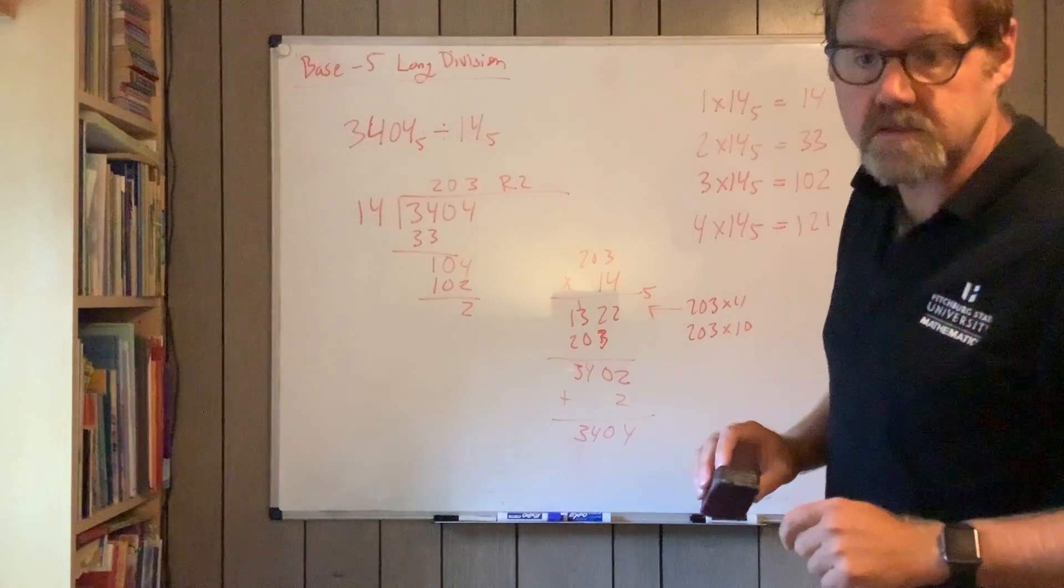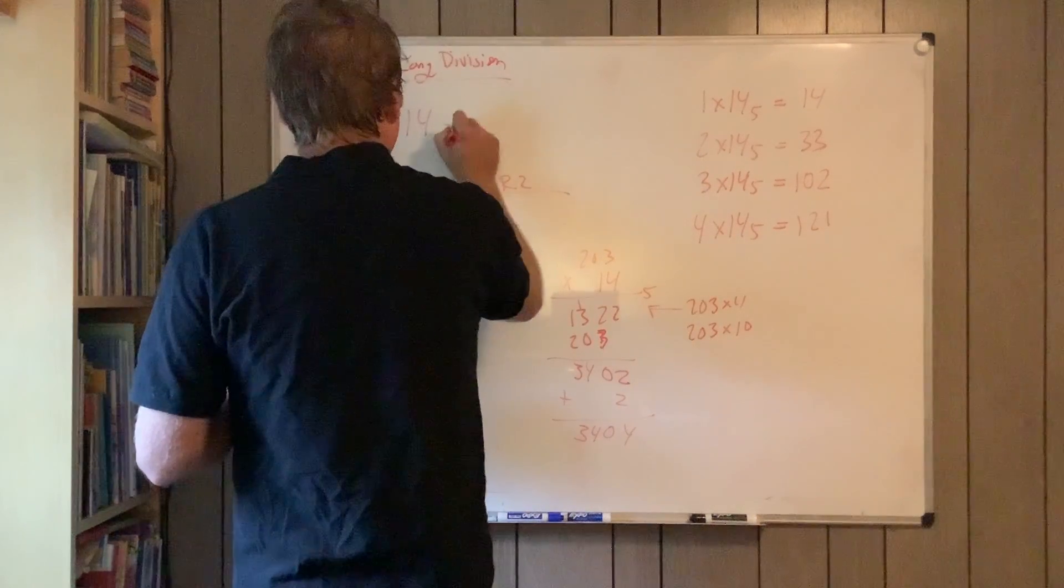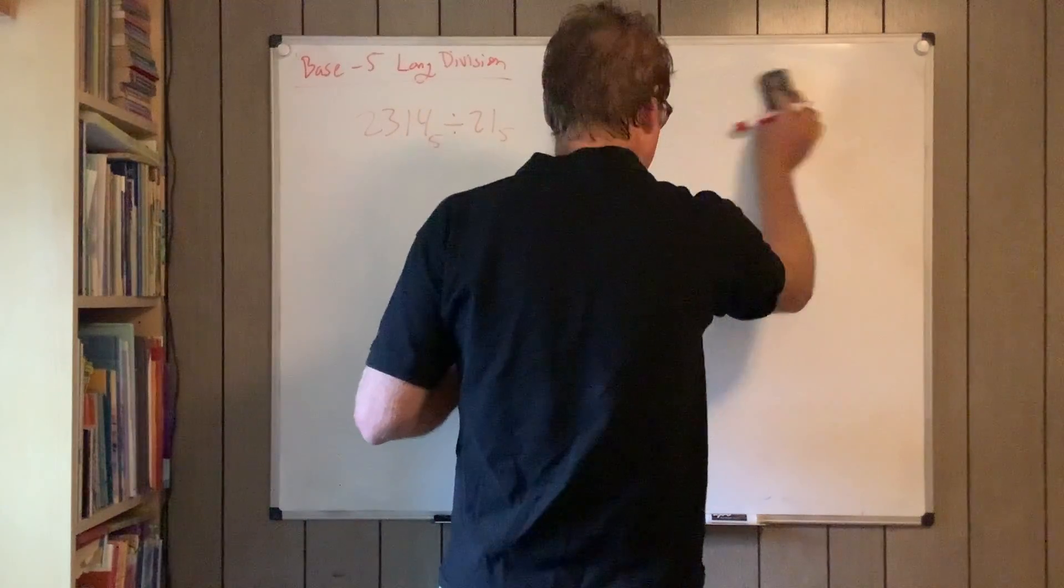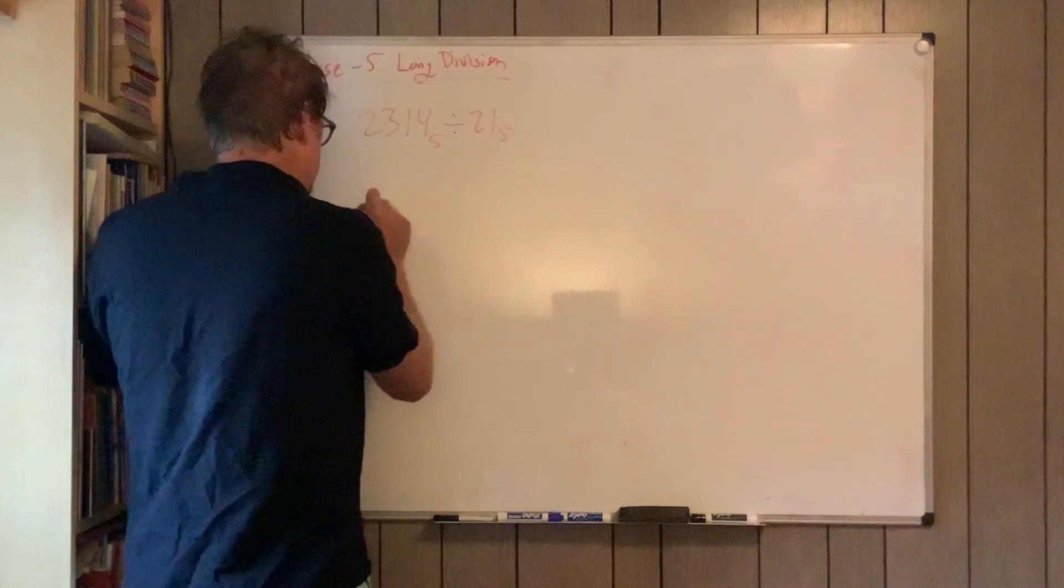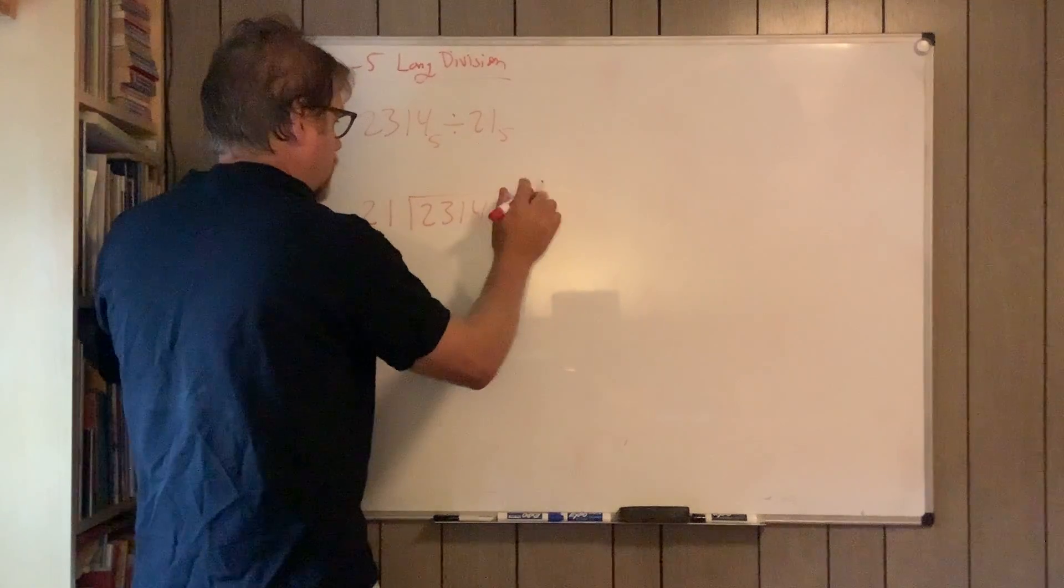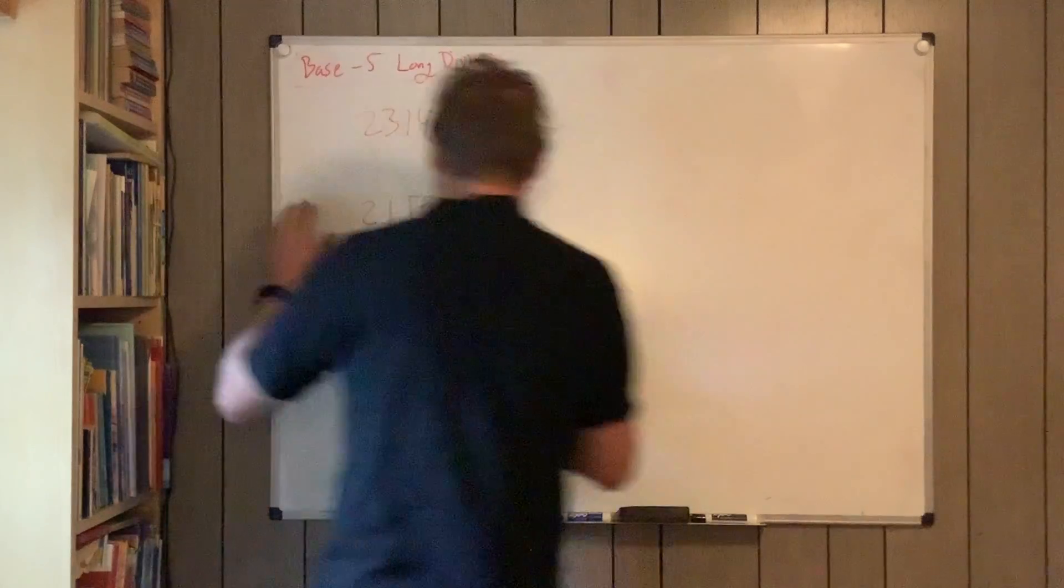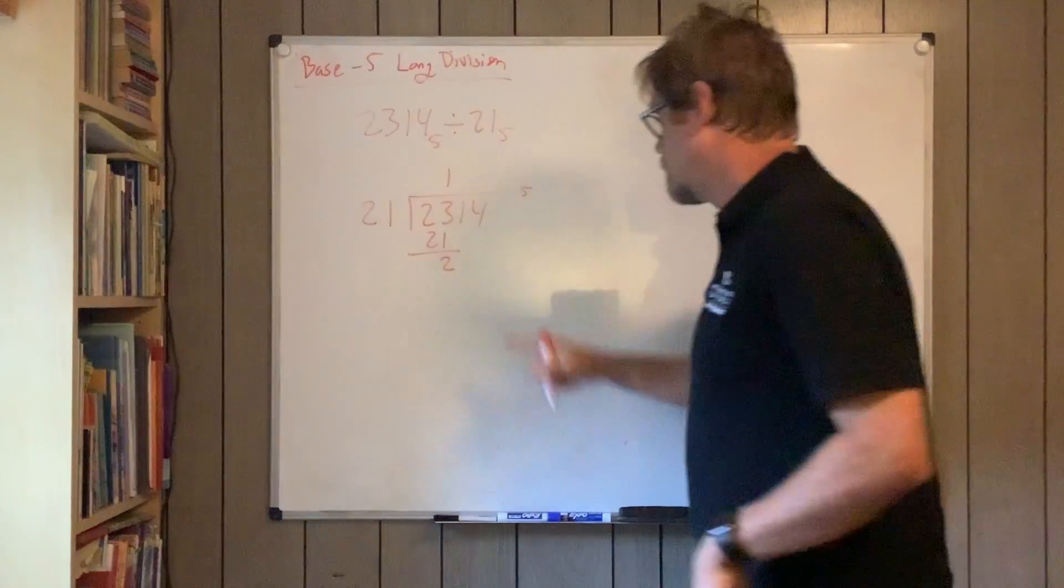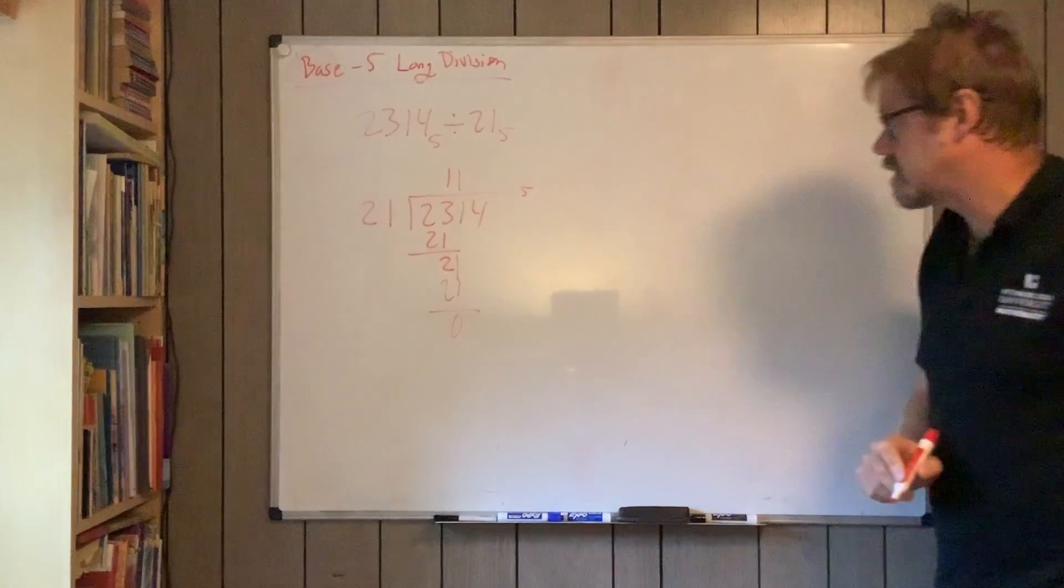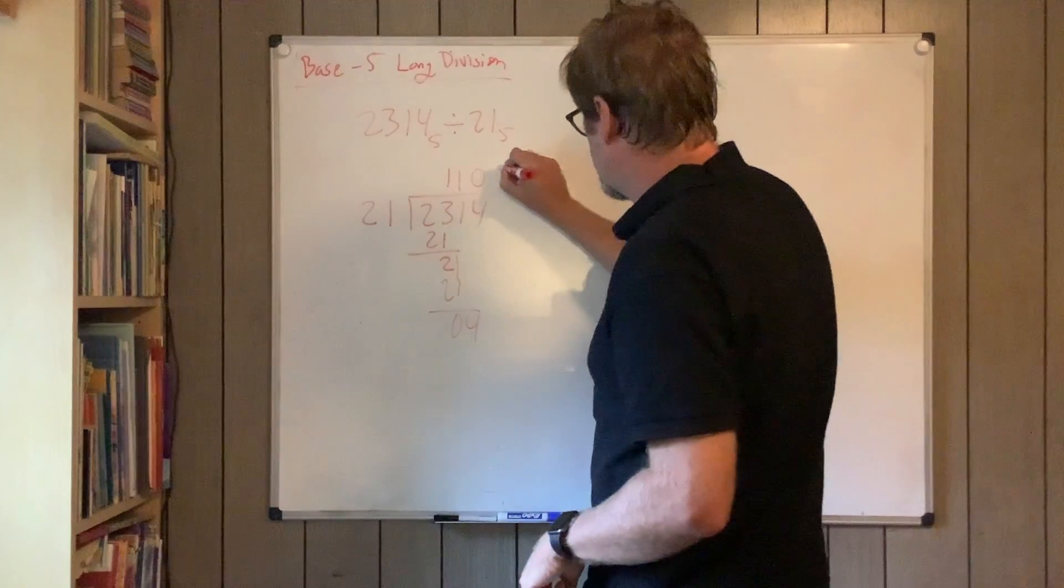And then I have one last one which I'm not going to do with the table. Let's see if we can pull this off. This is a little tougher. 2314 divided by 21, all base 5. I said you can do this - I'm going to try to see if we can do this without. I've actually picked a fairly nice one. 21, 23 - that goes once. And subtract. 21, 21, 10. Bring down the 4. 21 does not go into 04. So 0 remainder 4.